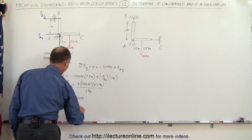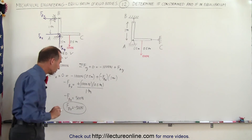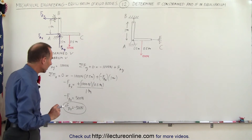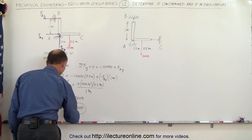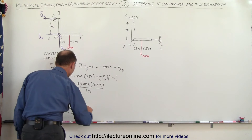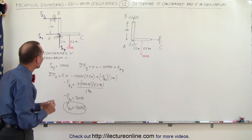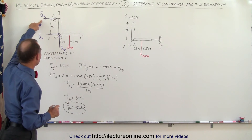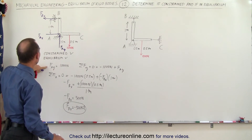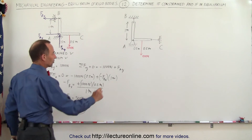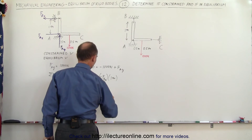It's more proper to write this as a vector with the unit vector. Now, using the sum of forces in the x direction equal to zero: we have minus 500 newtons from F sub B, plus the force of A in the x direction equals zero.